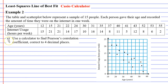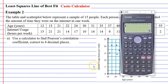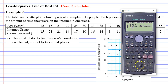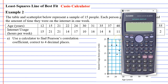Question A says: use a calculator to find Pearson's correlation coefficient, correct to four decimal places. We're going to bring up our Casio calculator. The first thing we need to do is clear anything stored on the calculator. Above 9 we can see CLR for clear, so we go shift 9, clear all, number 3, equals for yes, and AC to get out of that screen.